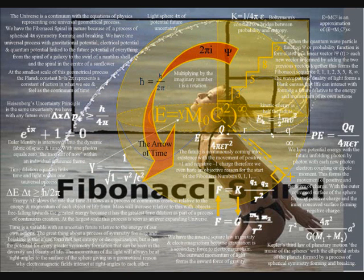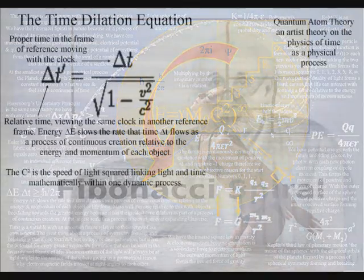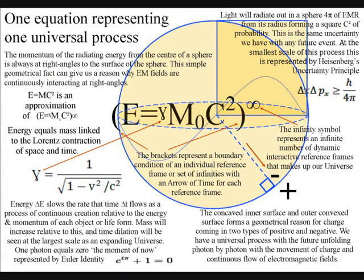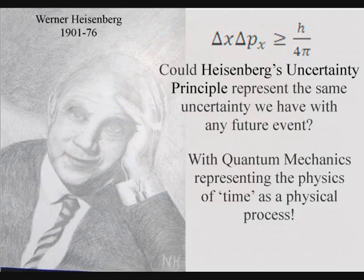This Hull theory can be explained in just one equation, representing one simple geometrical process, with energy equals mass linked to the Lorentz contraction of space and time. The Lorentz contraction represents the time dilation of Einstein's theory of relativity, with energy slowing up the rate that time flows as an interactive universal process of energy exchange. The letter C represents the speed of light radiating out in all directions, forming a sphere of electromagnetic radiation, and this has to be squared relative to its radius to give us the surface area of the sphere that forms the probability as the future unfolds photon by photon. At the smallest scale of this process, this is represented mathematically by Heisenberg's uncertainty principle.